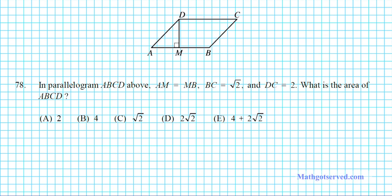Now we're shifting gears into geometry. Let's take a look at problem 78. It says: in parallelogram ABCD, AM equals MD, DC equals root 2, and DC equals 2. What is the area of parallelogram ABCD? The area of a parallelogram is base times perpendicular height. This entire length is the base, and the perpendicular height here is h. We're told DC is 2, so this side is 2. For every parallelogram, opposite sides are parallel and congruent, so the opposite side AB is also 2.